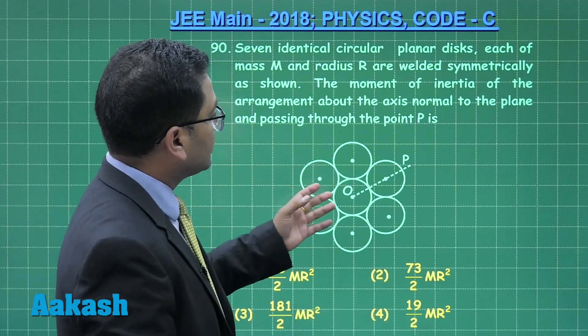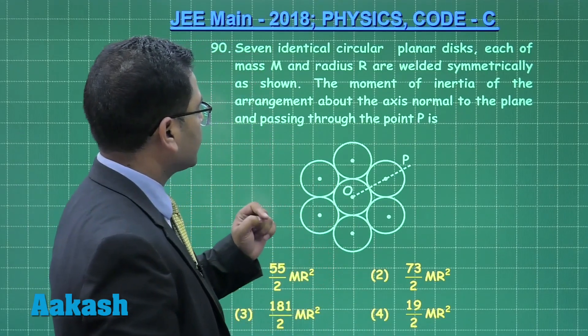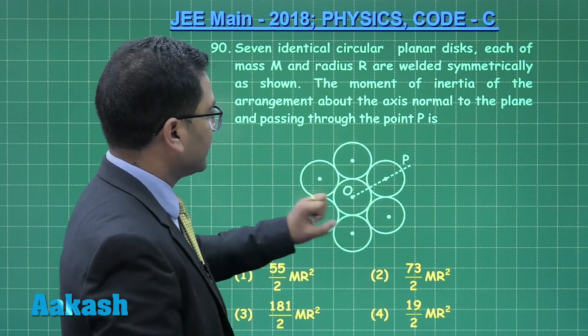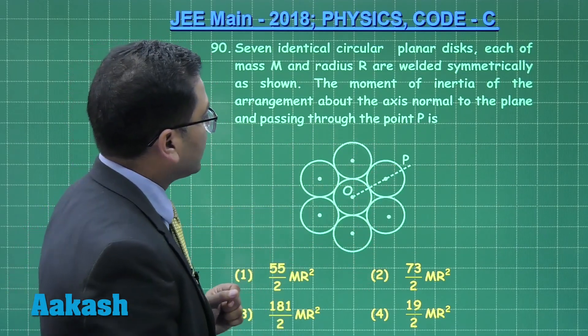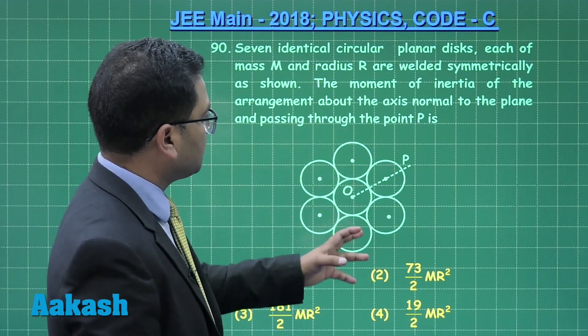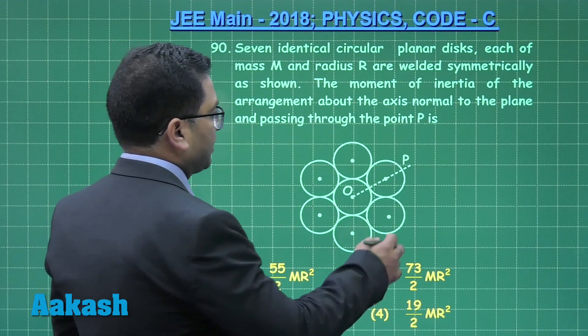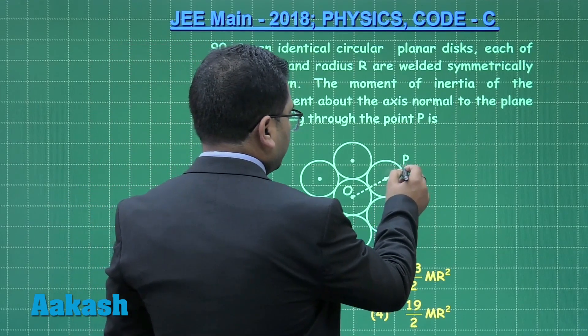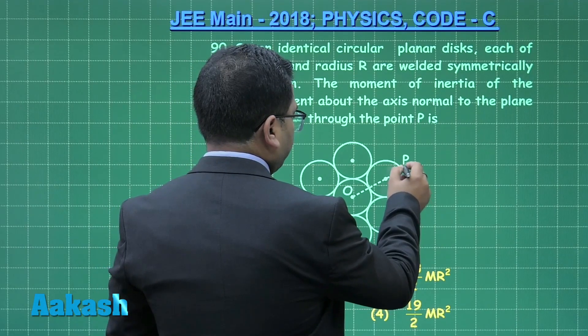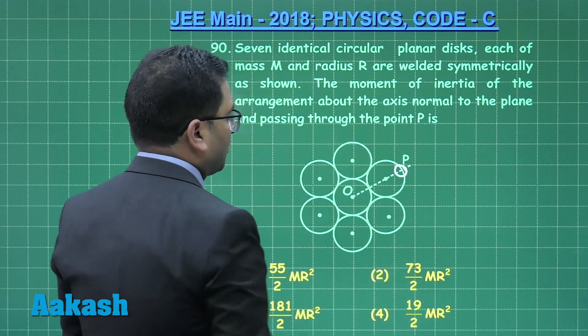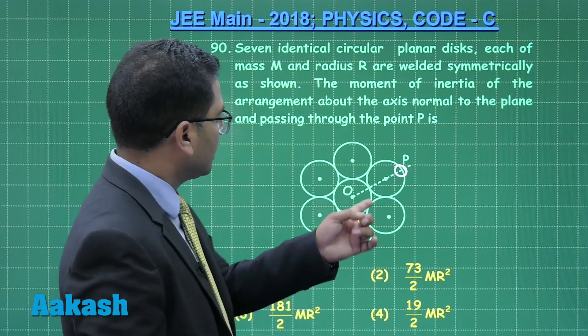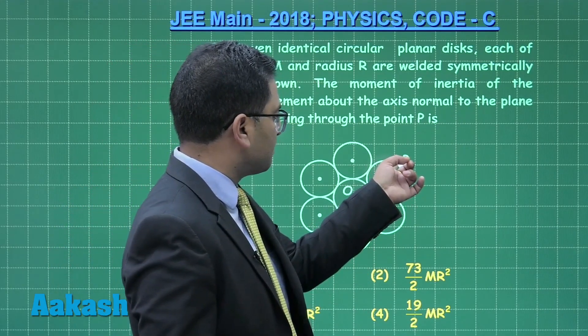Seven identical circular planar discs, each of mass m and radius r, are welded in this way and we need to calculate the moment of inertia of the arrangement about the axis normal to the plane and passing through point P. And point P is here, so we need to calculate the moment of inertia about an axis passing through P and perpendicular to this point.